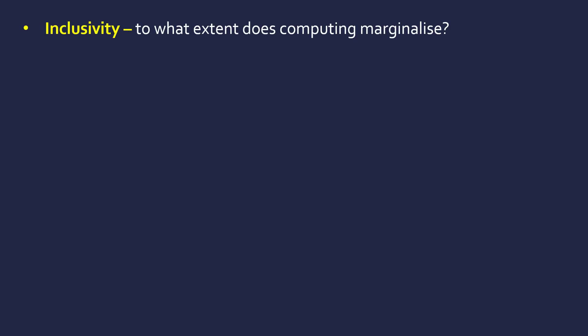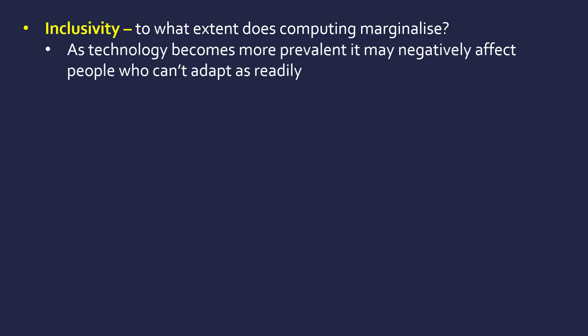A second ethical issue is inclusivity — making sure technology is inclusive, and asking to what extent does computing marginalise people? As technology becomes more prevalent in our society, it may negatively impact people who can't adapt as readily to this change: people like the elderly, people who are disabled, people who are in poverty, or countries that don't have the infrastructure or money to spend on technology. They may get left behind in the world economy.